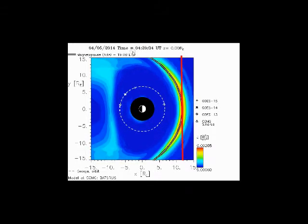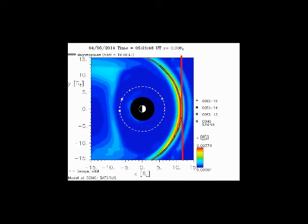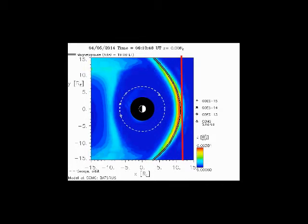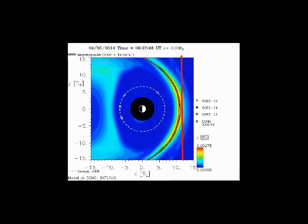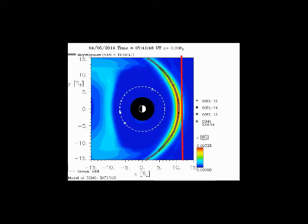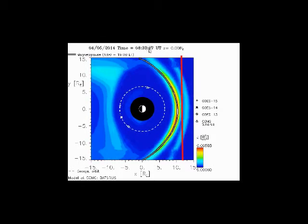You can see that it put the Earth under quite a bit of pressure. You can just watch it here as it pushes back away from that line. That's the force of that CME coming in. And the proton density and solar wind speed elevated.